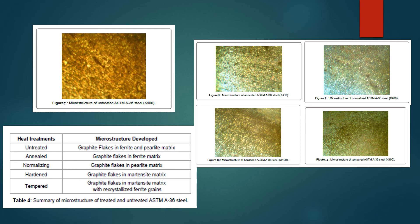In the microstructure of tempered specimens, highly recrystallized ferrite grains with some secondary graphite sites were observed. The micrograph also shows that the microstructure of the tempered sample consisted of a number of carbide particles precipitated out from the matrix. That concludes my presentation, thank you.